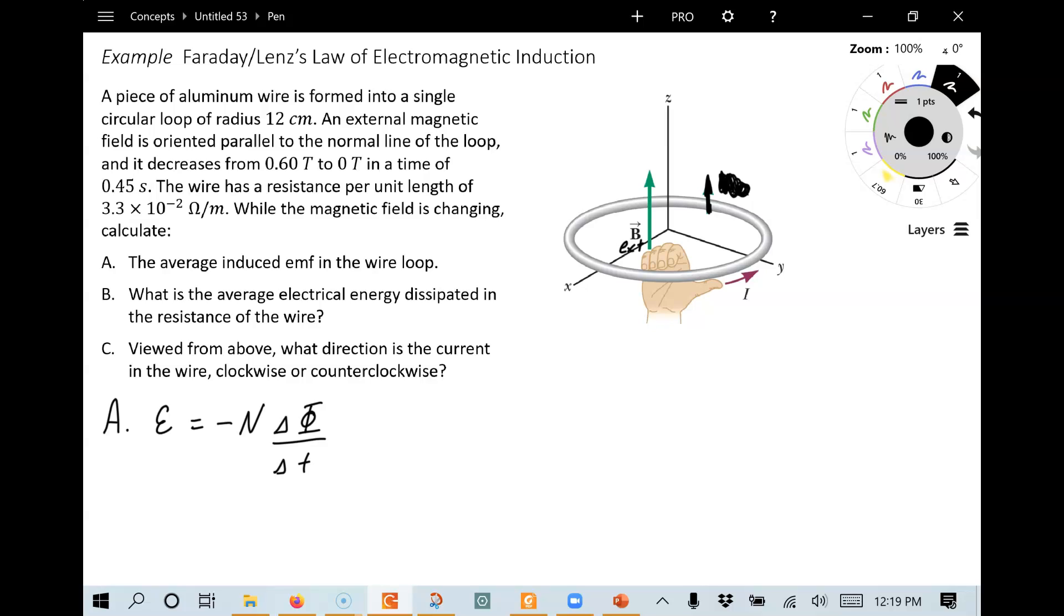Now in this case, this is average. Sometimes you see the bar, sometimes you don't, but the fact that it's a change here that makes it an average. In this case, we want to just know the magnitude of this. So I'm only interested in the absolute value. It's going to be n delta phi divided by delta t.